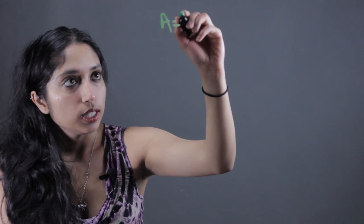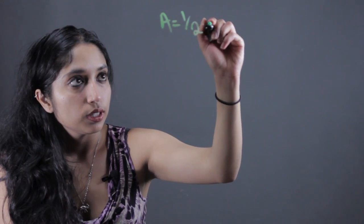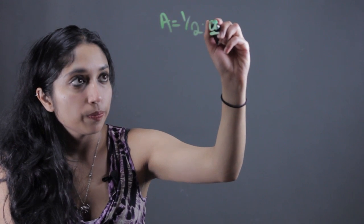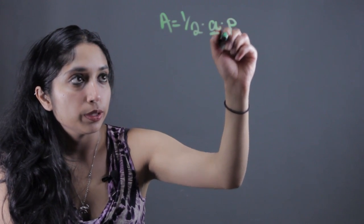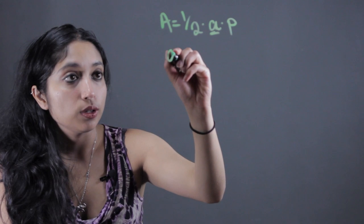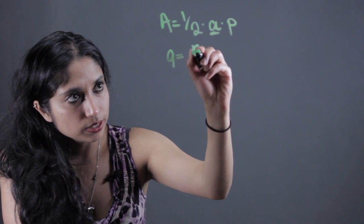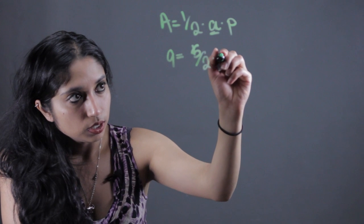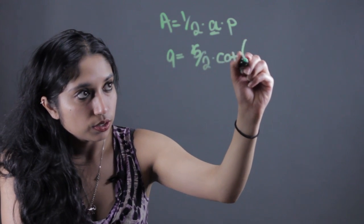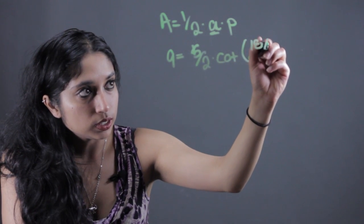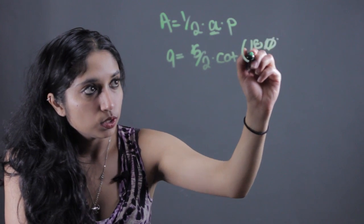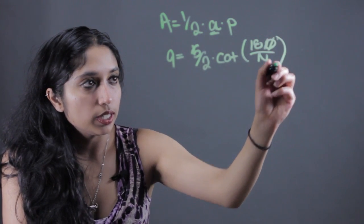So let's start with the equations we know. We know area is equal to one-half of something called the apothem times the perimeter. We know that we can write this apothem as sides over two times cotangent of 180 degrees divided by the total number of sides.